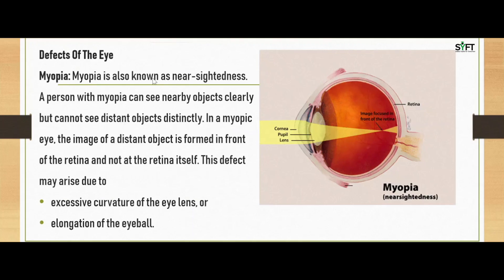Let us discuss the defects of the eye. First, myopia, also known as near-sightedness. A person with myopia can see nearby objects clearly but cannot see distant objects distinctly. In a myopic eye, the image of a distant object is formed in front of the retina, not at the retina itself. This defect may arise due to excessive curvature of the eyeball or elongation of the eyeball. As you can see in the image, the image is not formed at the retina but in front of it, which is why we are unable to see distant objects.